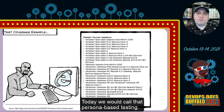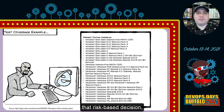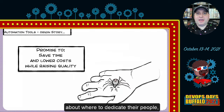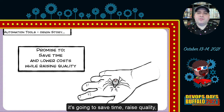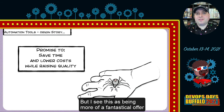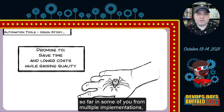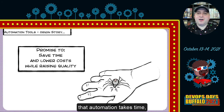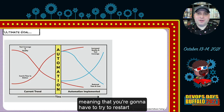Their solution was to identify the most common combinations, put them into buckets to represent customers, and test according to those common combinations. Today we would call that persona-based testing. Even with the resources of Microsoft, they still had to make that risk-based decision about where to dedicate their people and how to implement their automation. The promise of automation has always been that it's going to save time, raise quality, and lower costs — but automation takes time and money to invest in upfront before you start seeing those benefits, and done poorly, you'll have to restart and do it all over again.